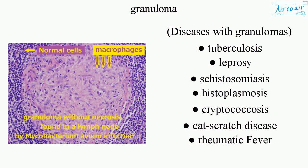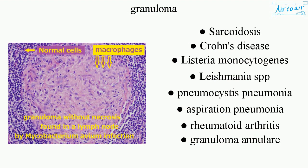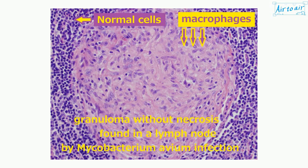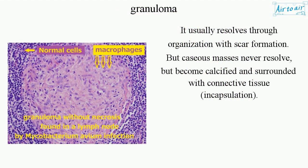Diseases with granulomas include: Tuberculosis, Leprosy, Schistosomiasis, Histoplasmosis, Cryptococcosis, Cat scratch disease, Rheumatic fever, Sarcoidosis, Crohn's disease, Listeria Monocytogenes, Leishmania SPP, Aspiration Pneumonia, Rheumatoid Arthritis, Granuloma Annulare, Foreign body Granuloma, and Perioral Dermatitis. It usually resolves through organization with scar formation.